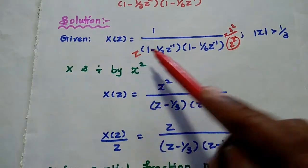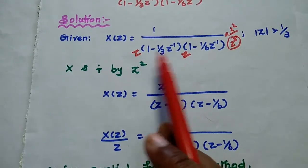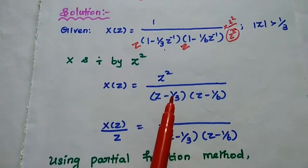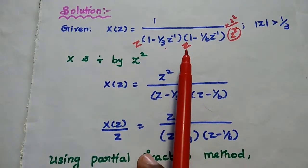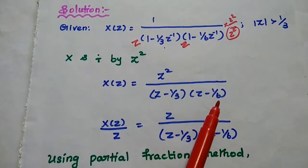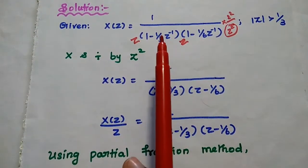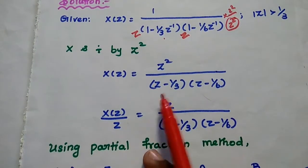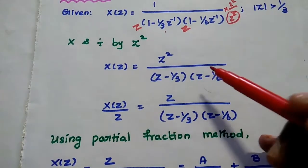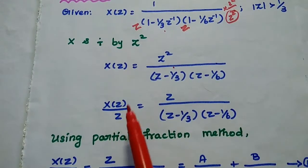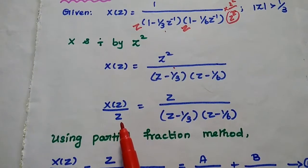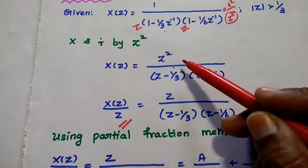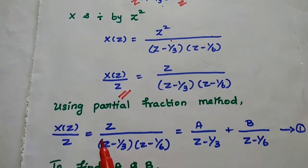After multiplying by Z², we get: 1·Z in the numerator and (Z - 1/3)(Z - 1/6) in the denominator. For further simplification, we move one Z to the left-hand side, giving us X(Z)/Z = Z / [(Z - 1/3)(Z - 1/6)].